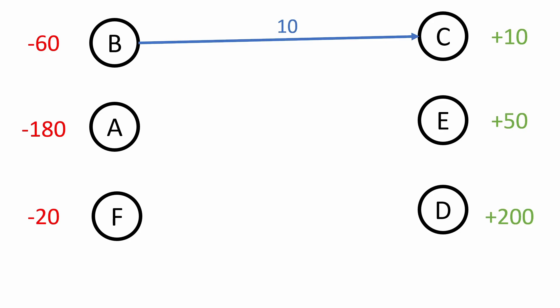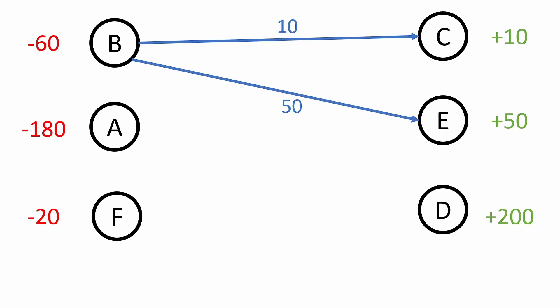Once we give 10 rupees from B to C, C is completely satisfied. B still needs to pay out 50 more rupees. If B gives 50 rupees to D, B is also satisfied since it had a total debt of 60. But D is still not satisfied. Alternatively, if we pay 50 to E instead, E needs exactly 50 rupees, so B, C, and E are all satisfied — making this an even better option.